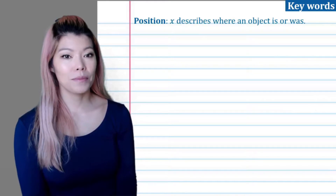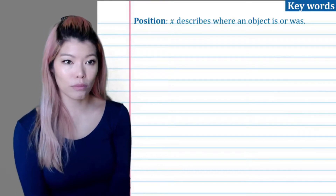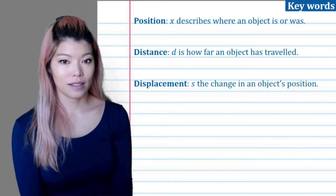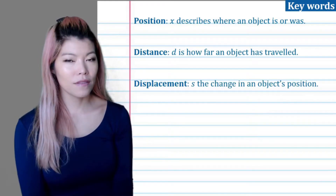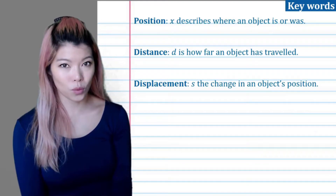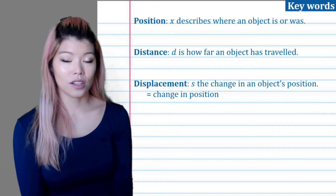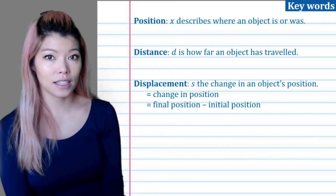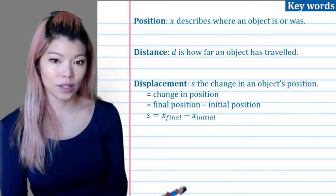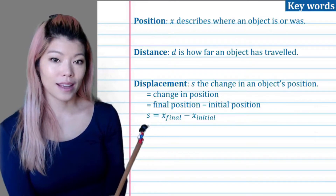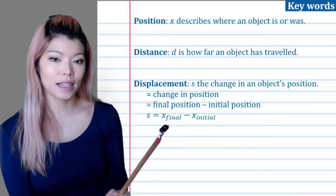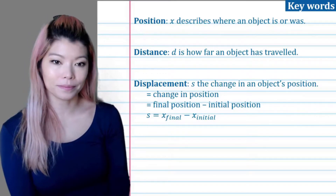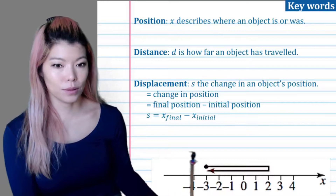First word: position — position means where you are, where the object is. Distance is how far you've traveled, whereas displacement is how far you've traveled compared to where you started, so it is the change in position, or in other words the final position minus the initial position. We represent it using these symbols: s is for displacement, and it's x_final minus x_initial, where x is the position.